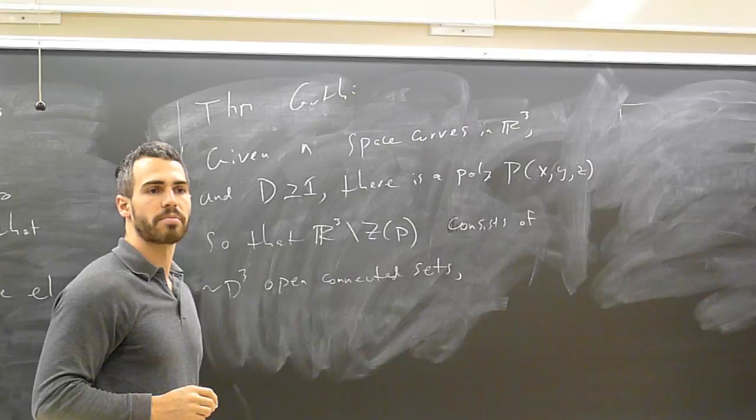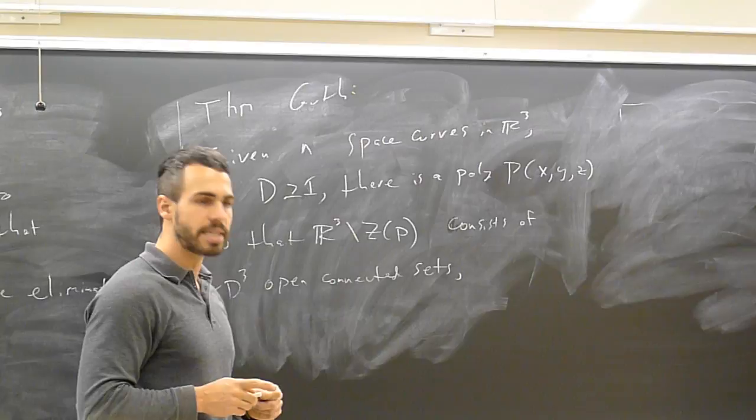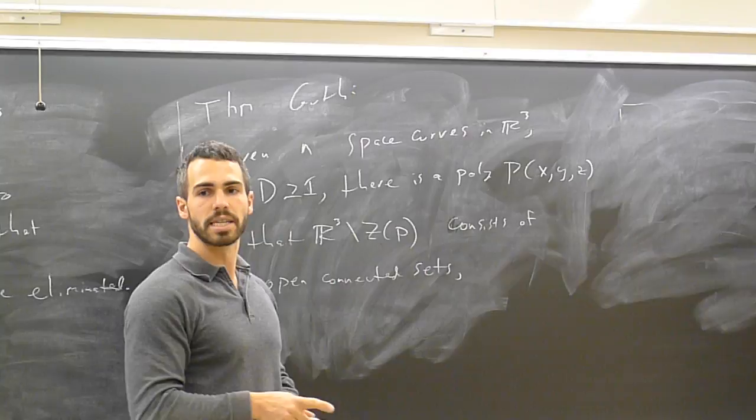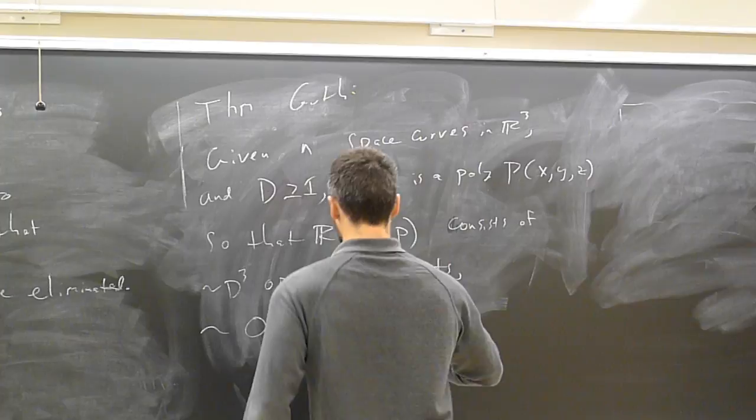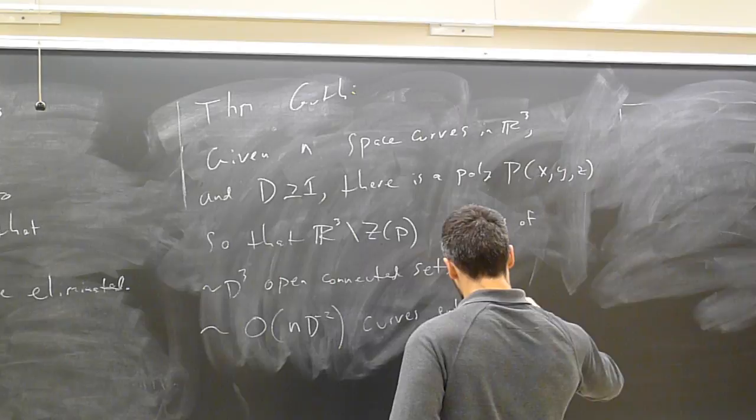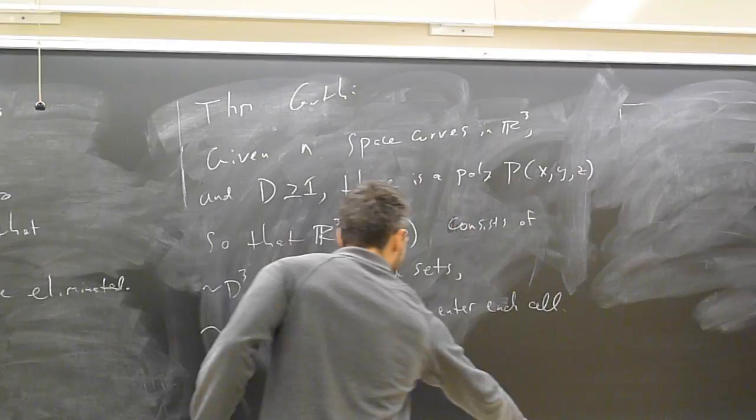And how many curves enter each one of these cells? Well, it's exactly the number that it has to be. So a curve is degree roughly 1. It means if a polynomial is to be D, the curve intersects the zero set of the polynomial roughly D times. So the event that a curve intersects the zero set, that should occur n times D times. And if there's D³ cells, we want things to be as spread out as possible. It should be roughly n over D² curves enter each cell.